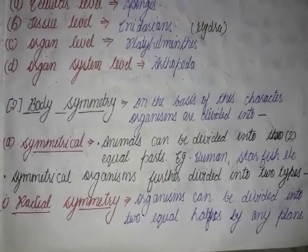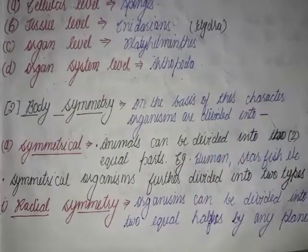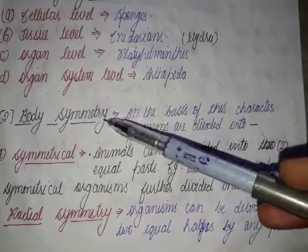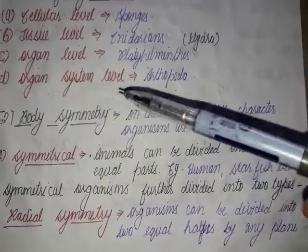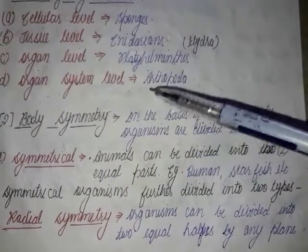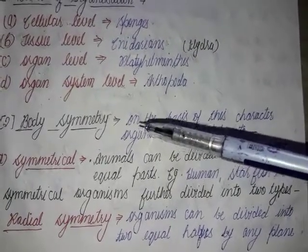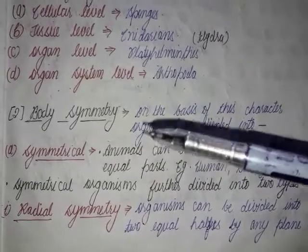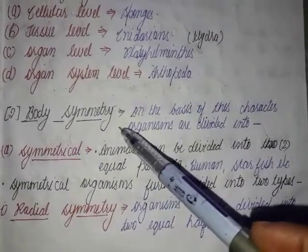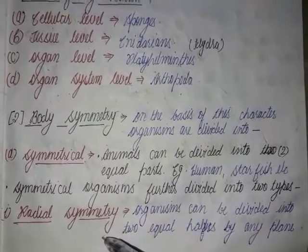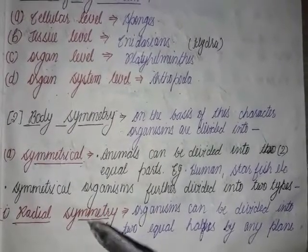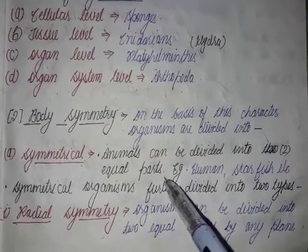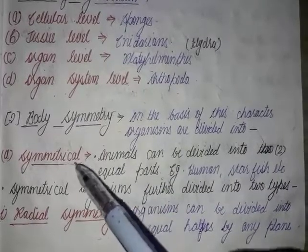Now next is body symmetry. Symmetry refers to the similarity in the arrangement of parts on opposite sides of the body. On the basis of body symmetry, organisms are mainly of two types: the first is symmetrical and the second is asymmetrical. Symmetrical means when the animal body can be divided into two equal parts. Organisms of this type are called symmetrical organisms.